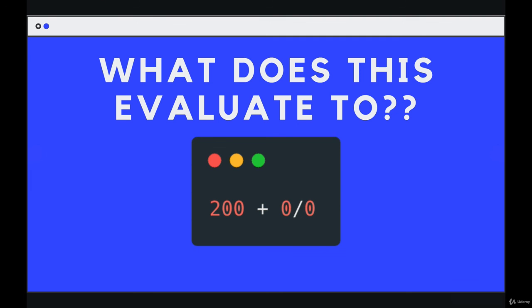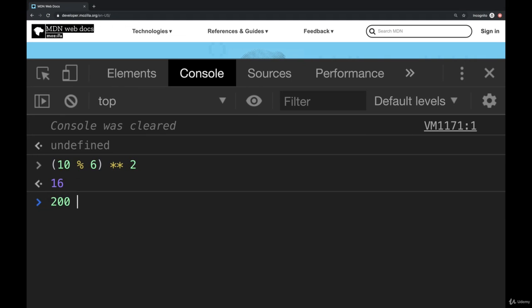So the overall answer is NaN, or not a number. 200 plus 0 divided by 0, not a number. That's it.